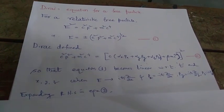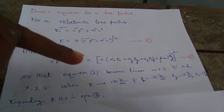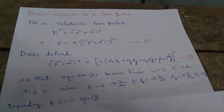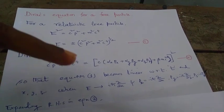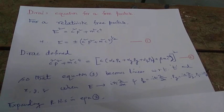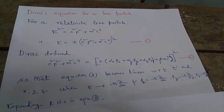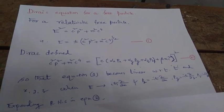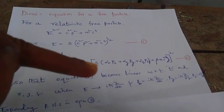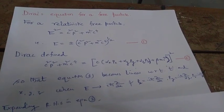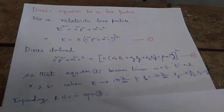Dirac defined the quantity in the square bracket, c²p² + m²c⁴, as equal to [c(αₓpₓ + αᵧpᵧ + αᵤpᵤ) + βmc²]², where pₓ, pᵧ, pᵤ are the components of linear momentum, and αₓ, αᵧ, αᵤ are certain things which can be found, plus βmc² all raised to power 2 as equation number 2.